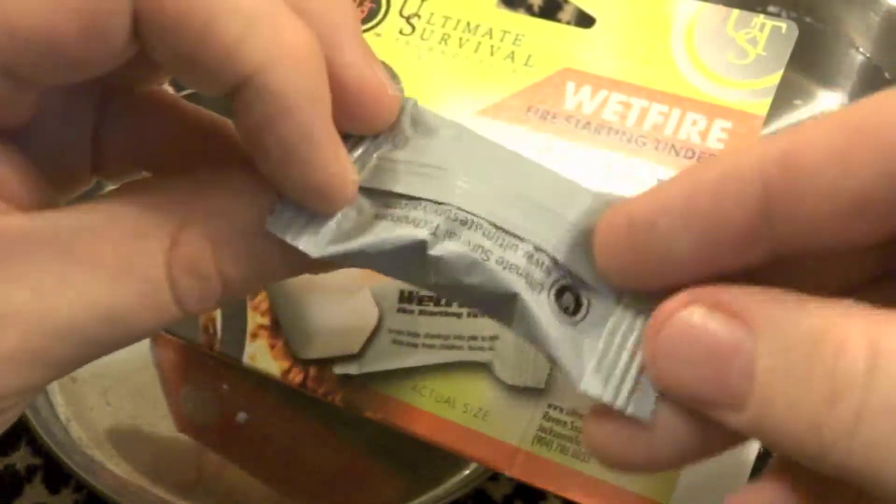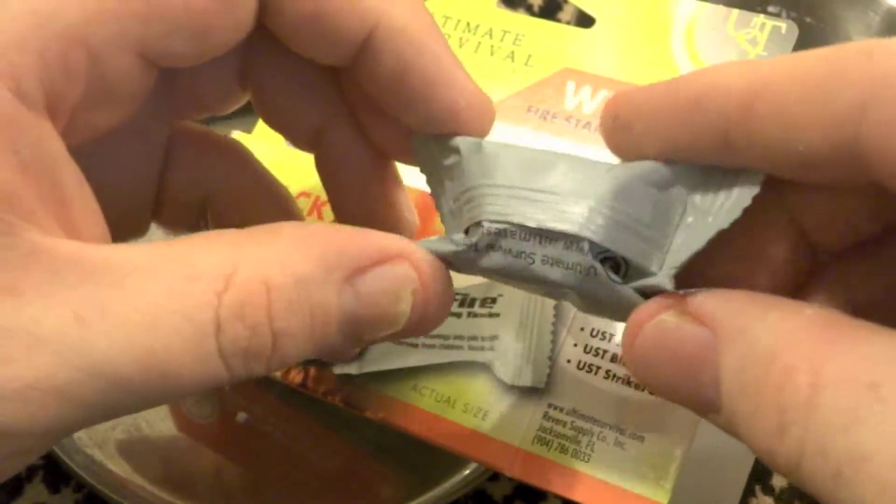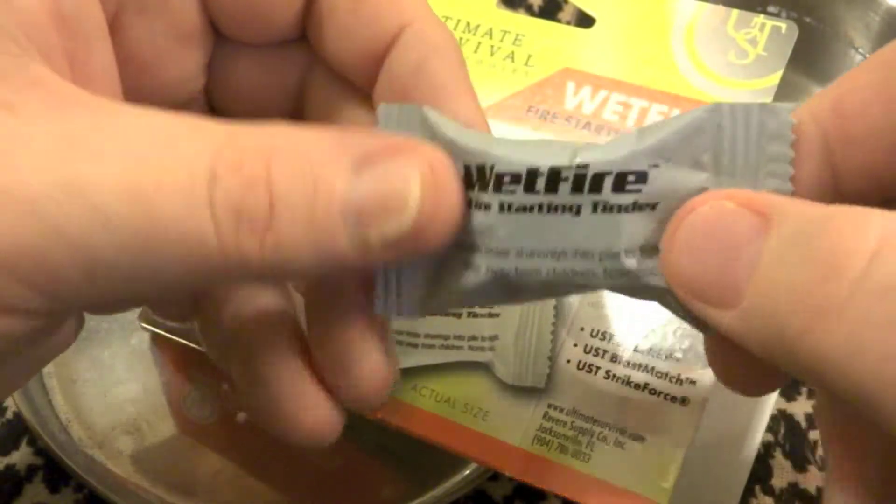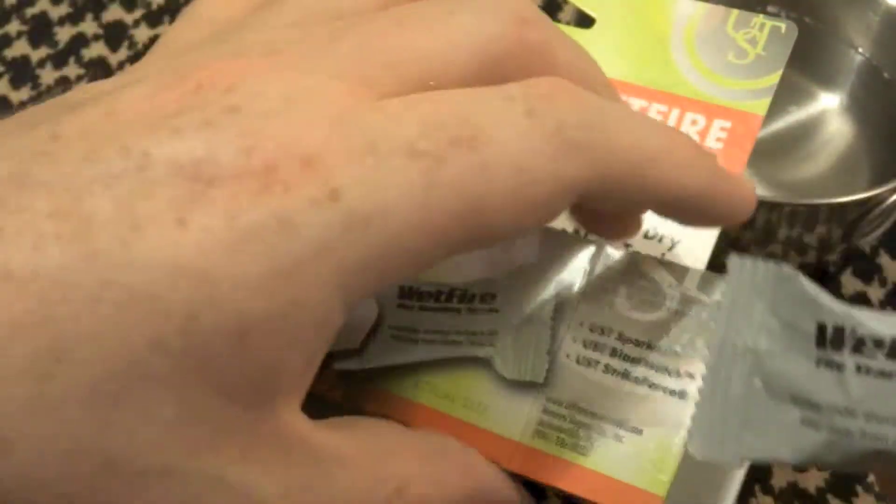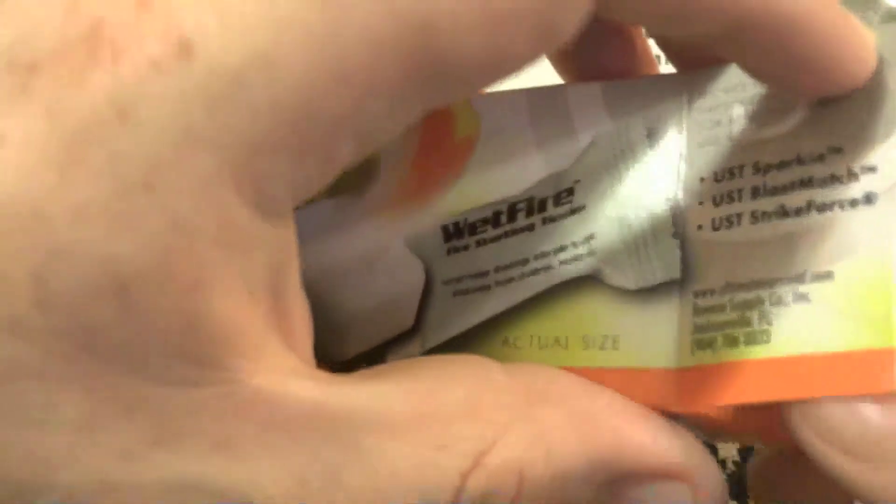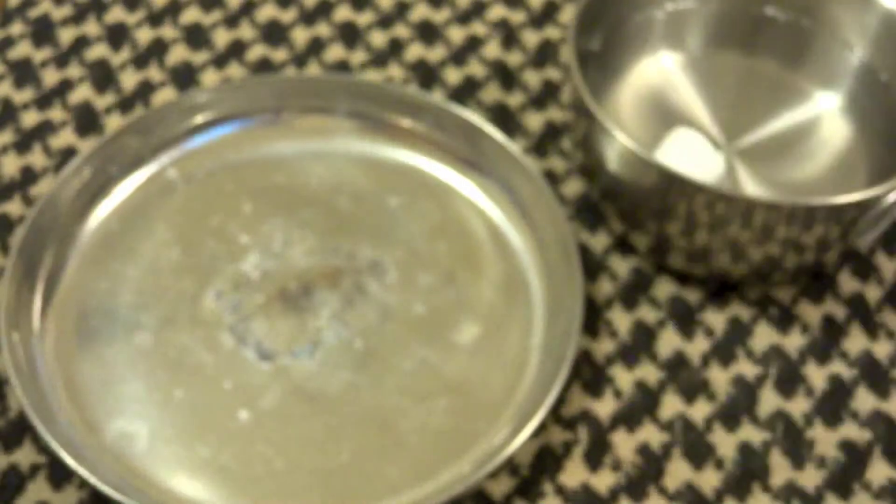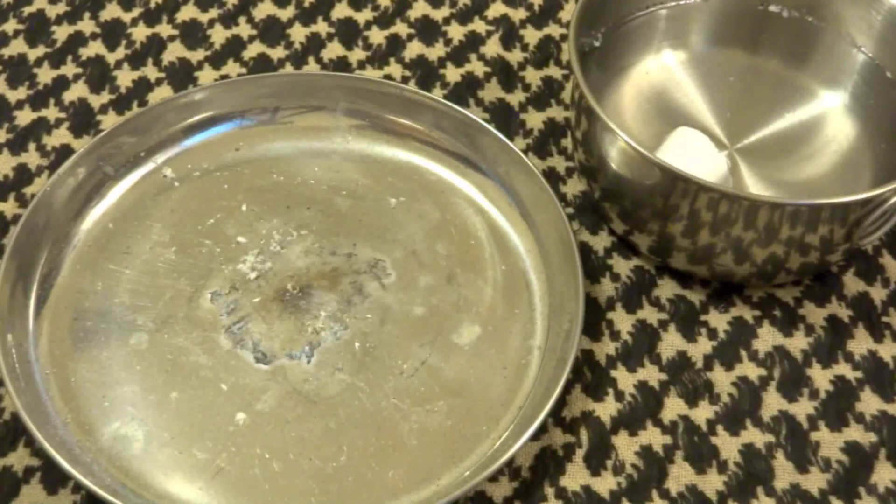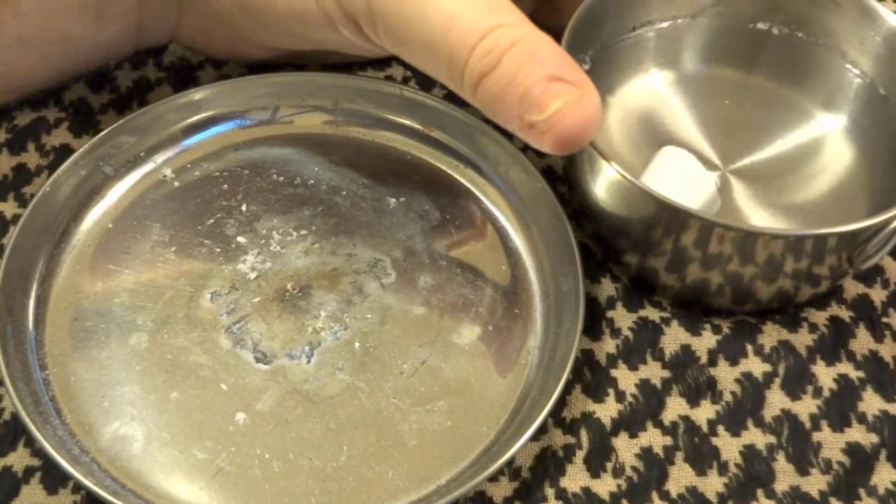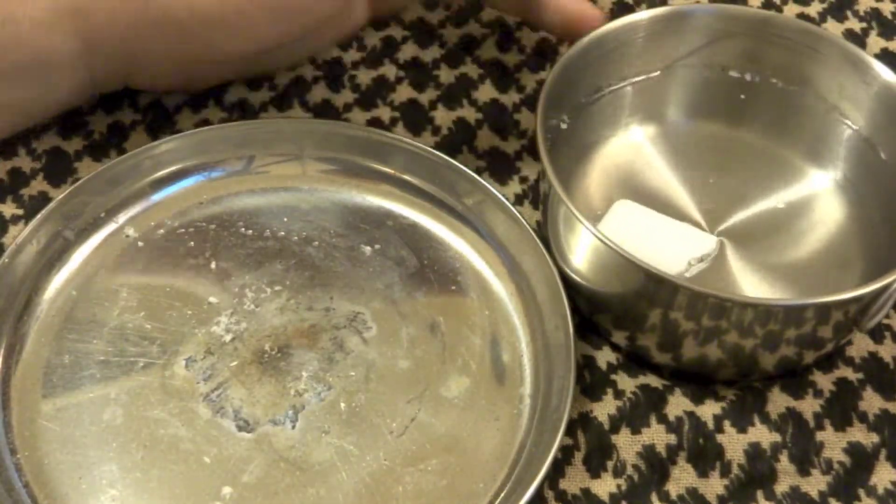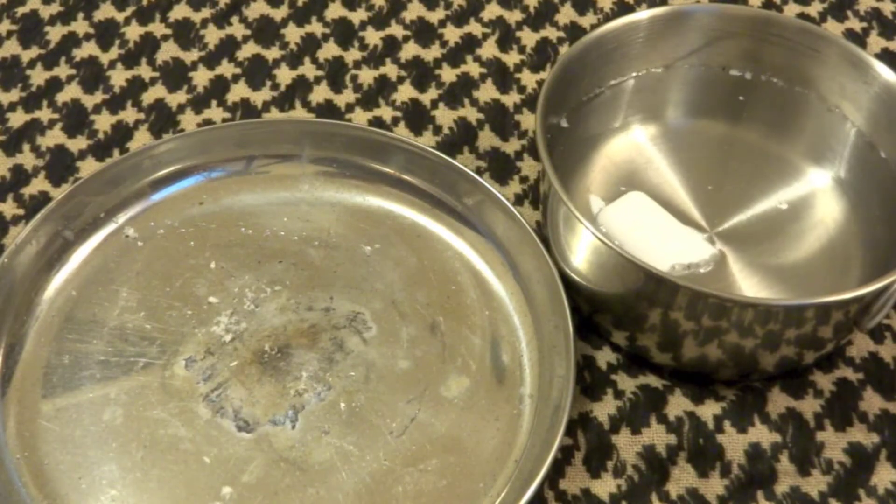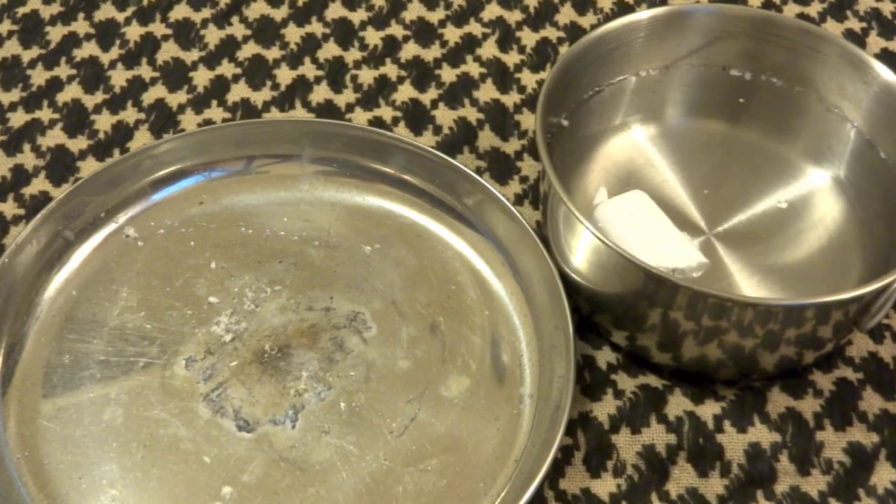So anyways, comes in these nice little packages here. Watertight, airtight. This material has some sort of whatever it is, it'll off-gas and if it's not sealed up, it'll eventually off-gas and lose all of its flammability. So it's nice that those are in a little package like that because you can stick them in your emergency kit when you absolutely need to have fire.